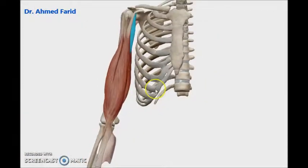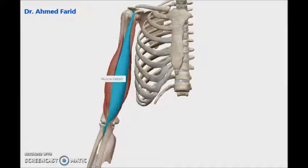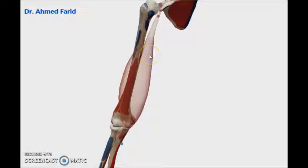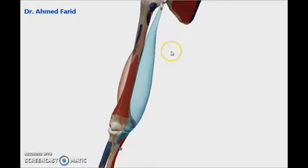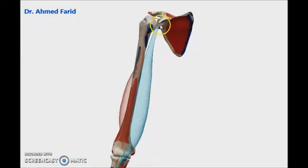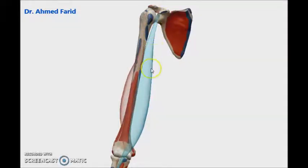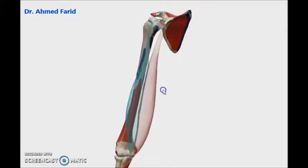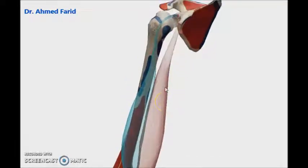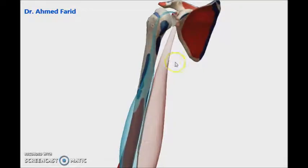Regarding the biceps brachii muscle, it has a long head laterally and a short head medially. The short head takes origin together with coracobrachialis from the tip of the coracoid process of the scapula. The long head takes origin from the supraglenoid tubercle of the scapula — above the glenoid cavity. So I have two heads: the short head from the tip of the coracoid process, and the long head from the supraglenoid tubercle.